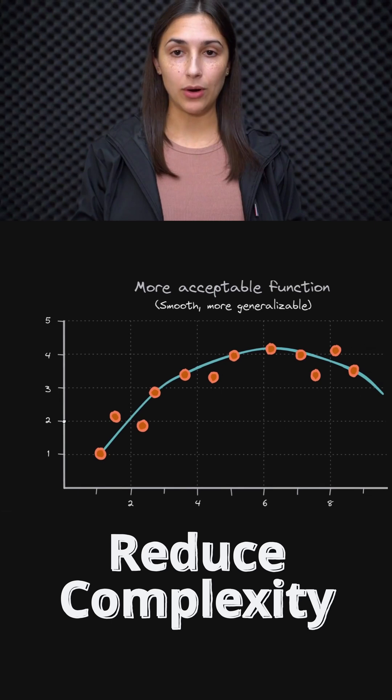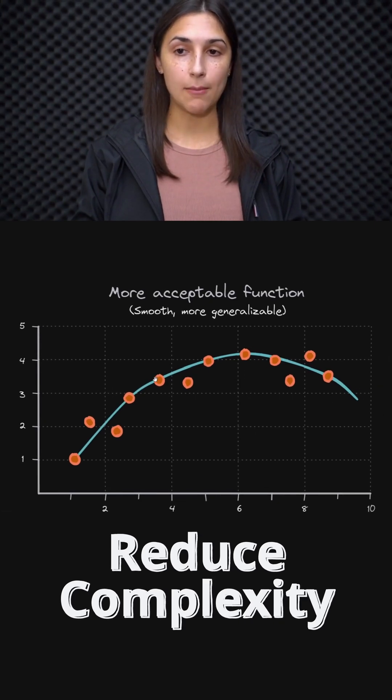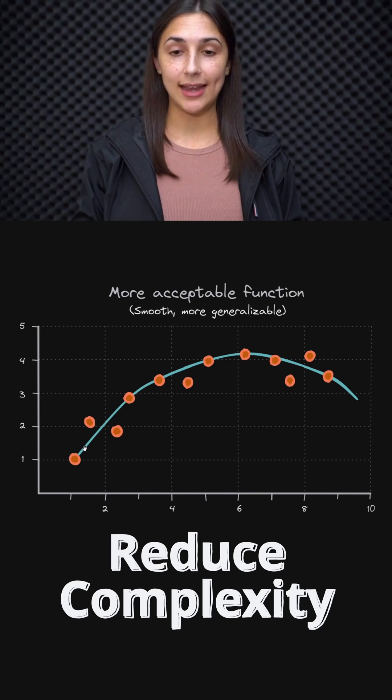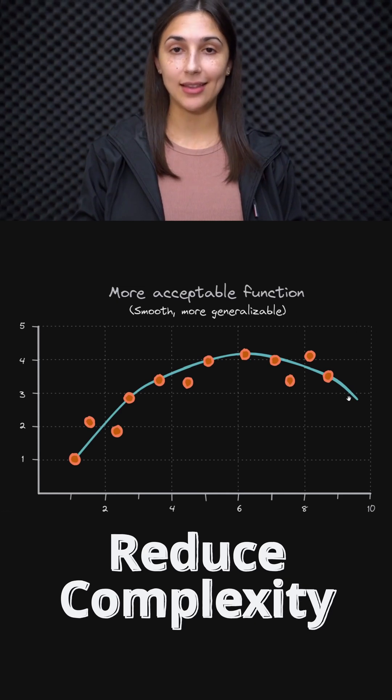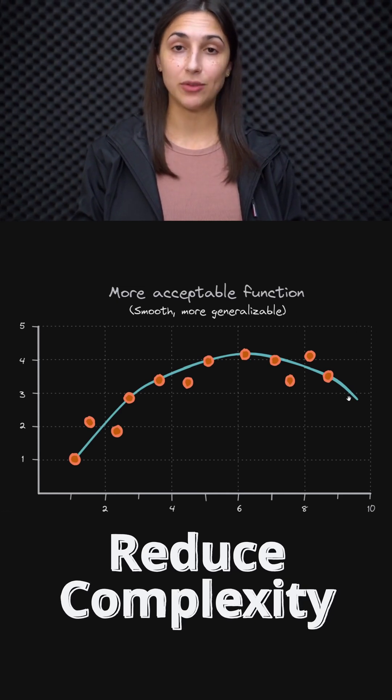That might look more like this example. As we can see, this function is smooth and more generalizable, and it's fitting the training data pretty well. There is a bit of error, but this gives us room to fit and approximate data outside of the training set since it's not so specific and not so complex for this training set.